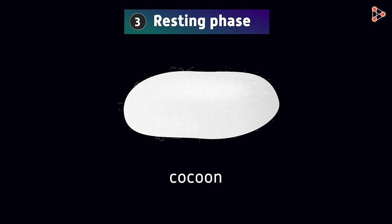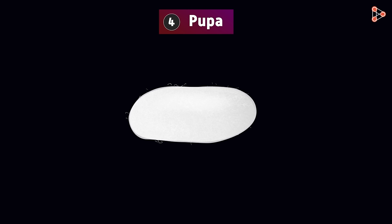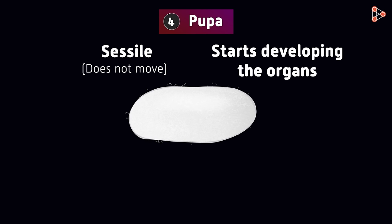Once the cocoon is formed, the larva inside it starts resting and enters the next stage of its life cycle, called the pupa stage. The pupa stage is where the organism is sessile, which means it does not usually move, and it starts developing the organs which adult moths have. The pupa rests inside the cocoon and starts developing into an adult.